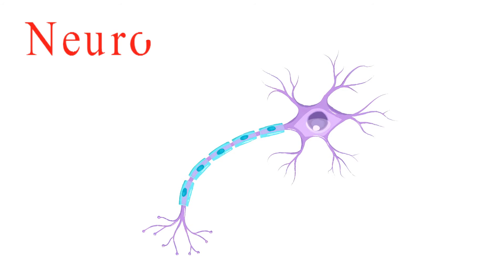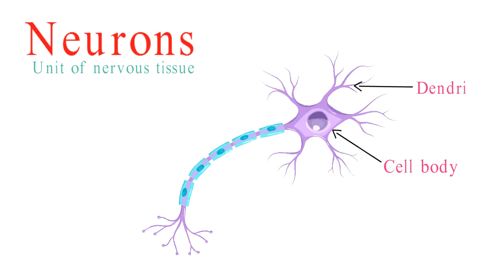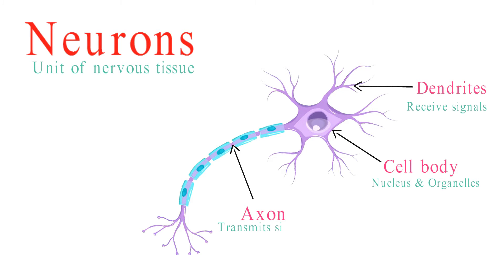Neurons are the units of nervous tissue. They have three main parts: the cell body, dendrites, and axon. The cell body contains the nucleus and other organelles, while dendrites receive incoming signals, and the axon transmits those signals away from the cell body. Often, axons are insulated by a myelin sheath, which speeds up signal transmission.